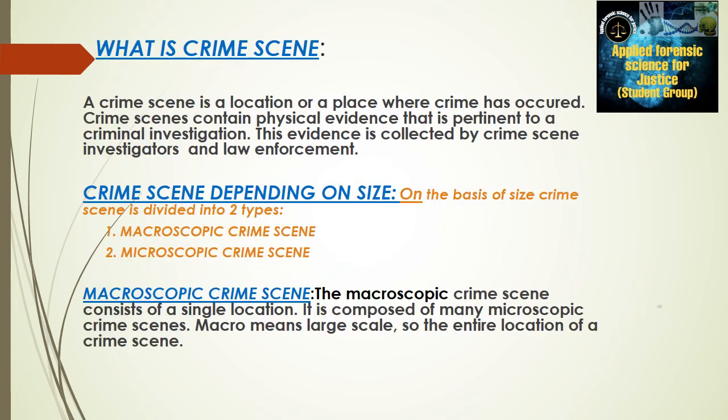Our introduction: what is crime scene? A crime scene is a location or a place where a crime has occurred. Crime scenes contain physical evidence that is pertinent to a criminal investigation. This evidence is collected by a crime scene investigator and law enforcement.